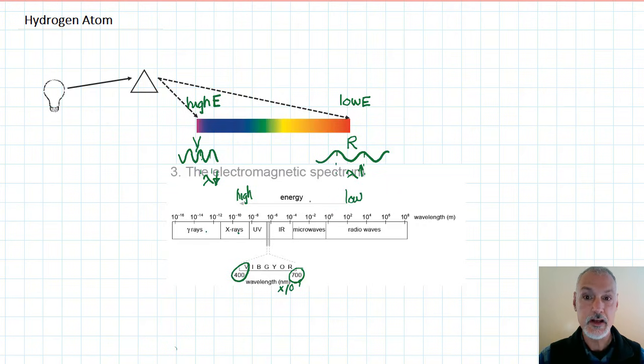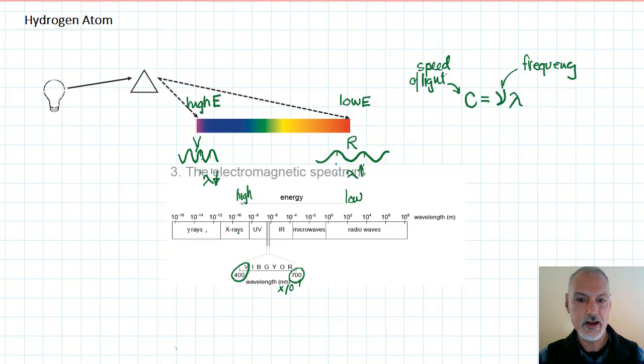These waves also differ in another property called its frequency and this comes from an equation related to this unit, the universal wave equation. This symbol here represents the frequency of our wave. C is the speed of light which is always 3 times 10 to the eighth meters per second. It's a constant value.